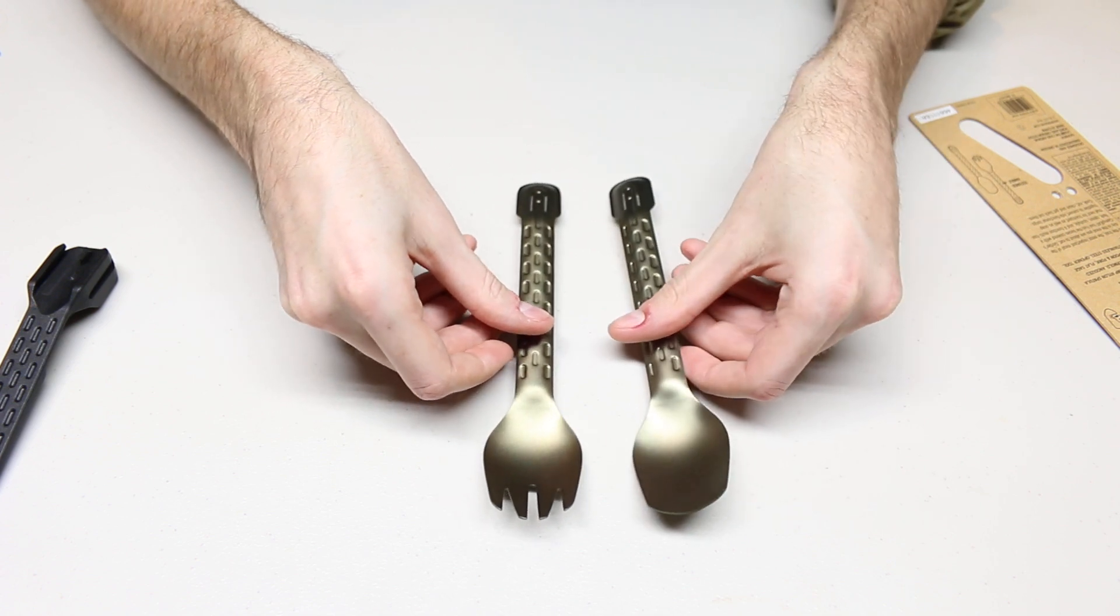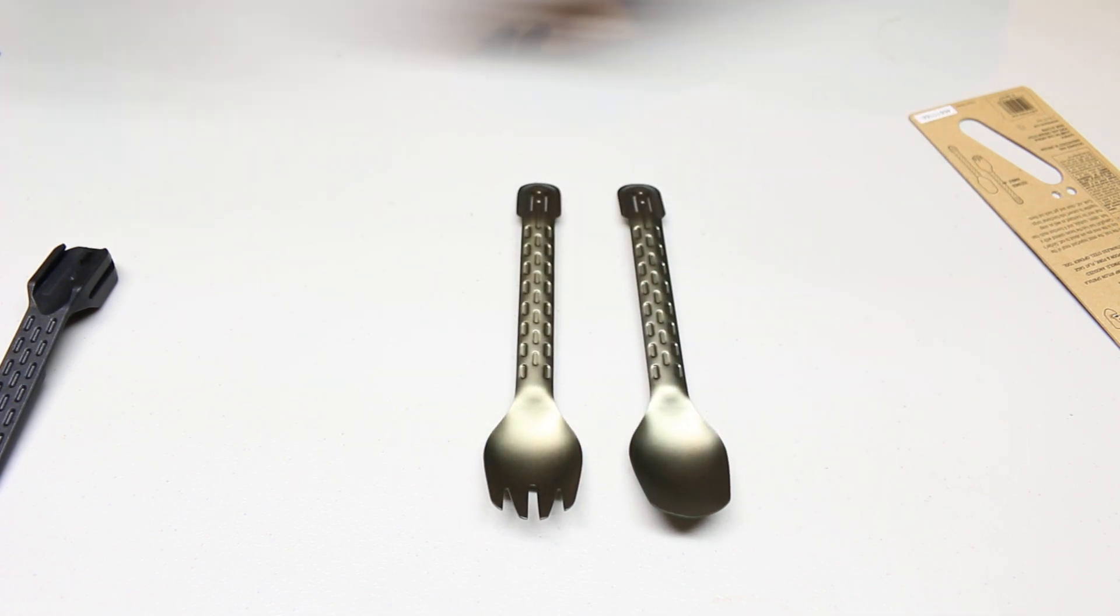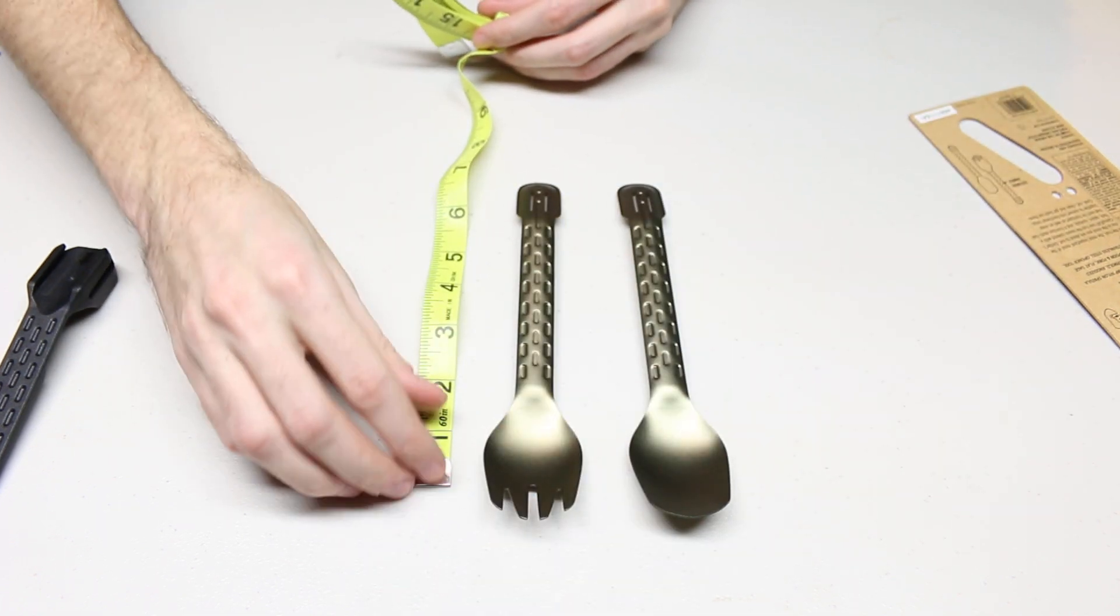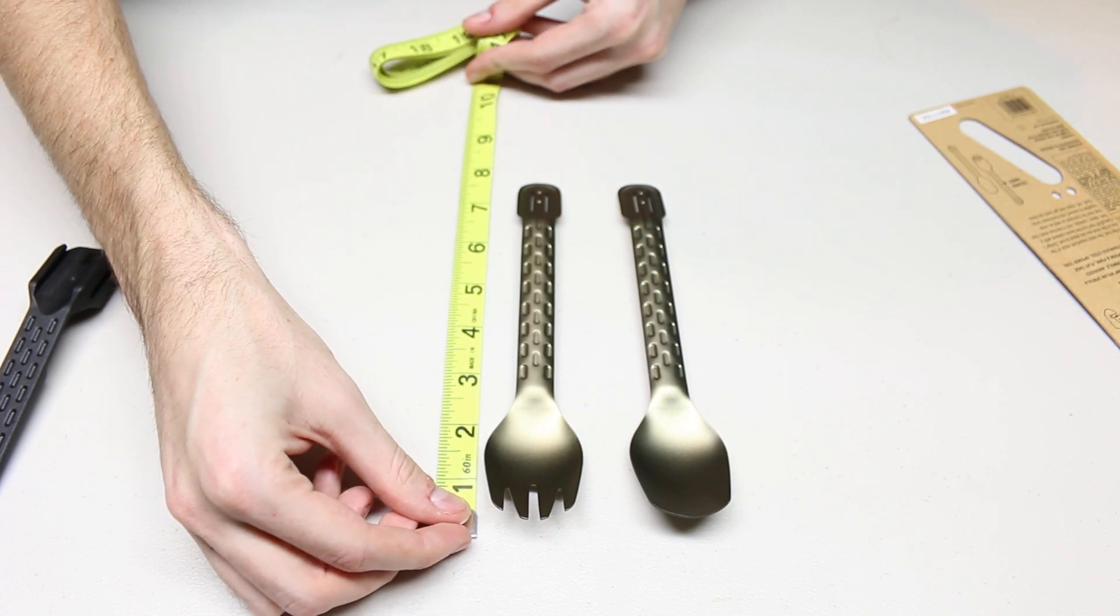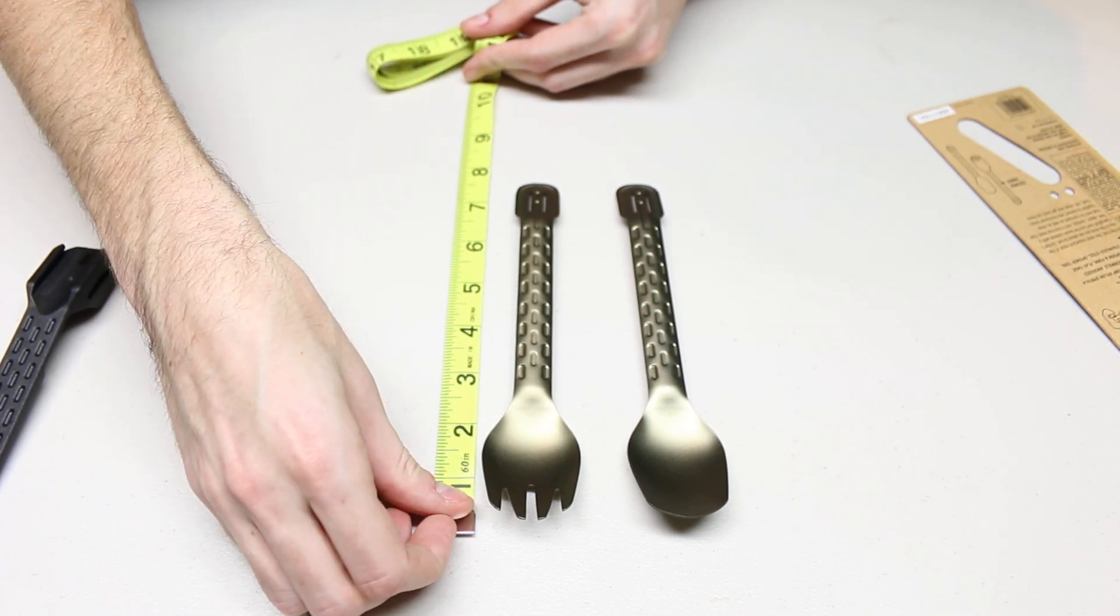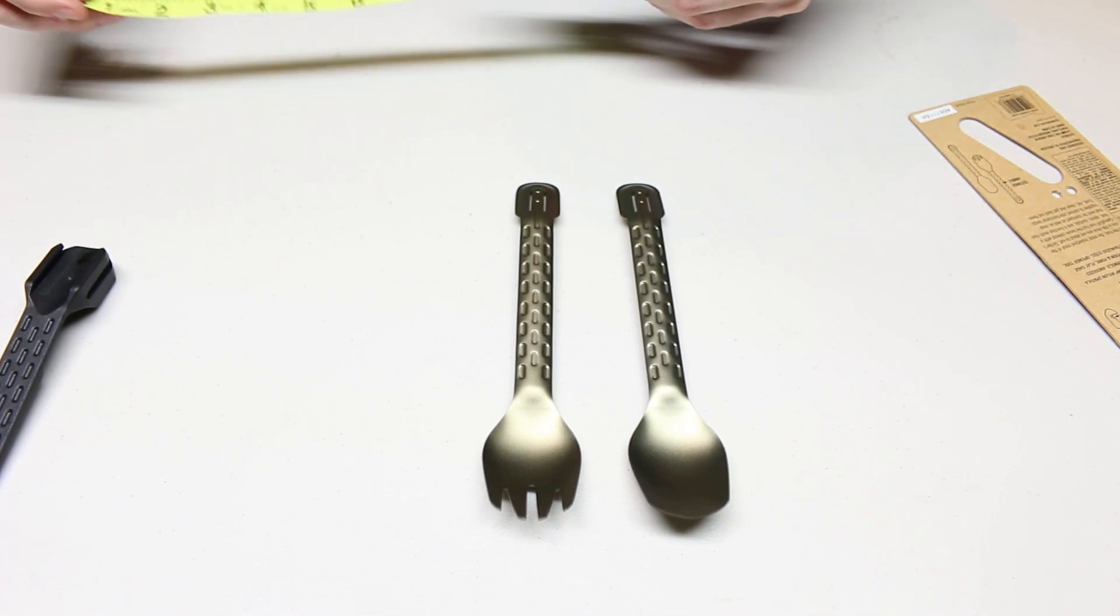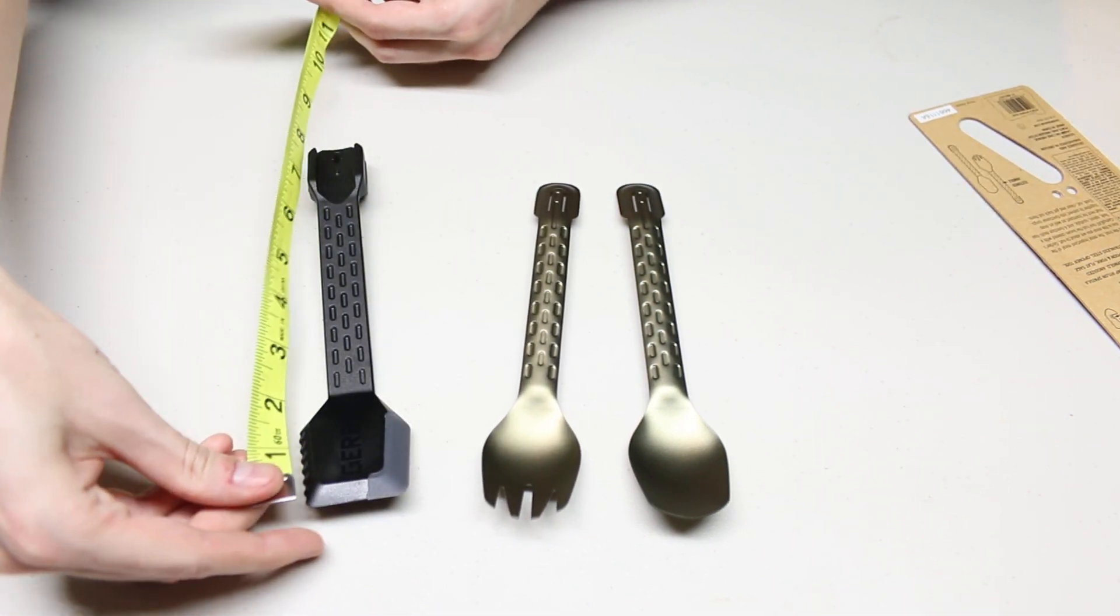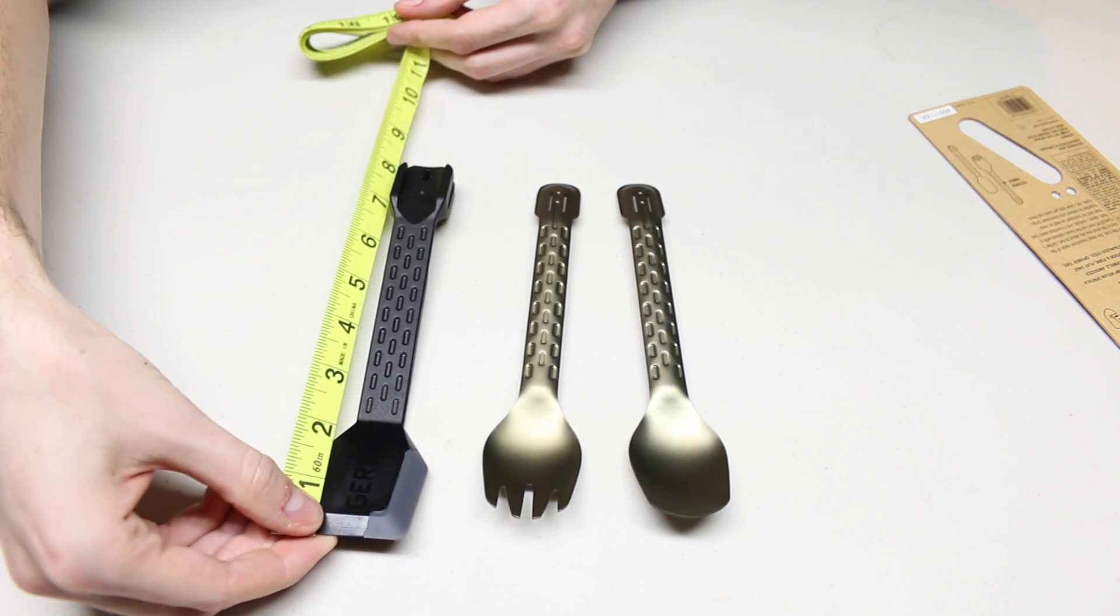To kind of give you a size comparison, I believe these are just at, I think it's seven and a half inches right there from the tip of the fork to the very end. So yeah, seven and a half inches for both the fork and spoon and then the spatula I believe is a little bit longer. Yeah, just at eight inches.